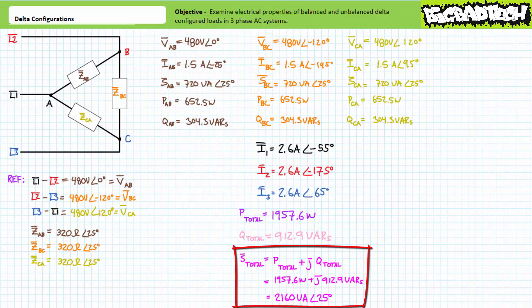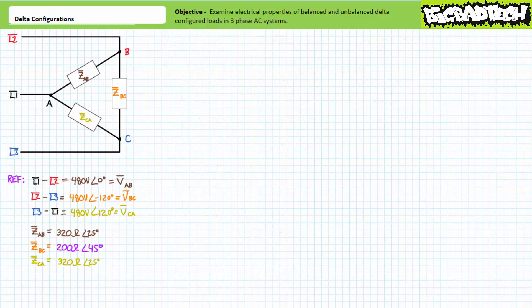Too easy. In summary, balanced delta configurations allow us to take some serious shortcuts. Not so in unbalanced delta configurations — but as long as you remain organized, correct results are well within your reach.